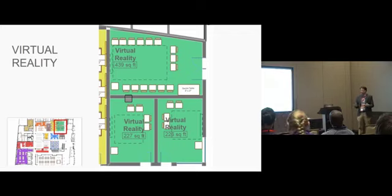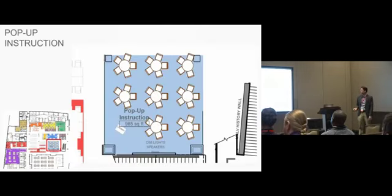We decided to go with one classroom and two kind of small breakout rooms. And we use HTC Vive at our school, at the library. That's the technology we chose to go with. Pop-up instruction is just an open-air instruction space. It's also dually purposed. So when classes, when instruction isn't happening in that space, it's just general seating.